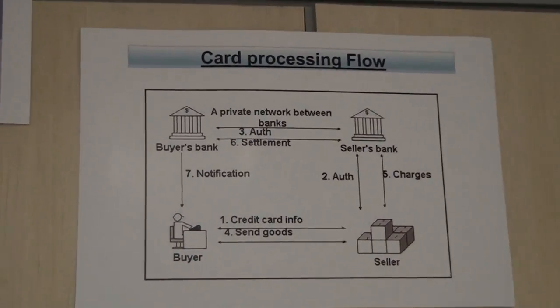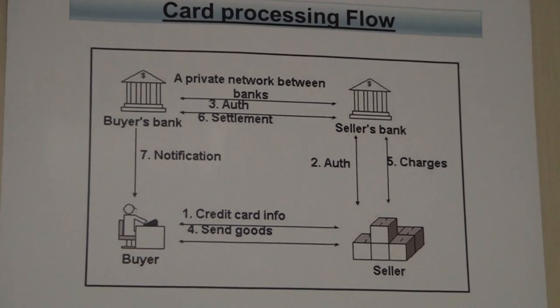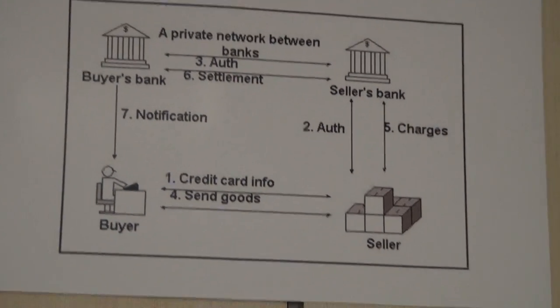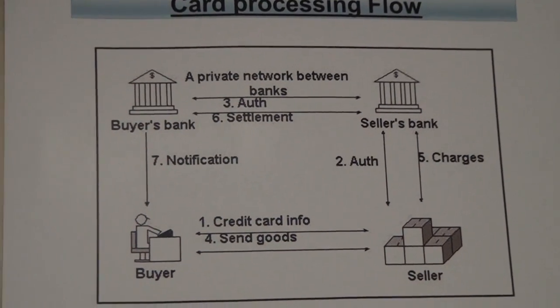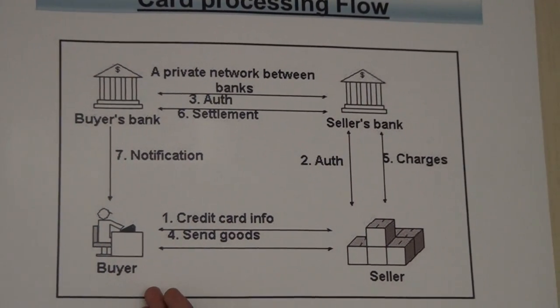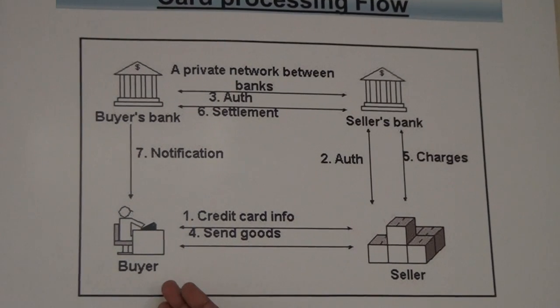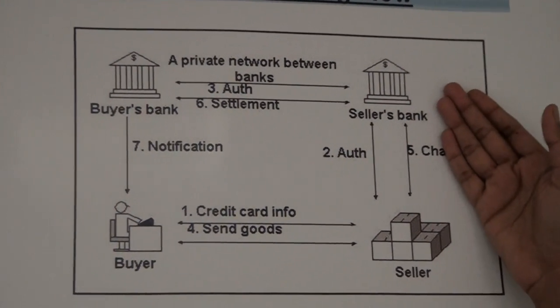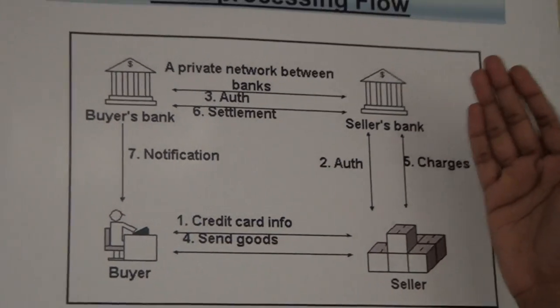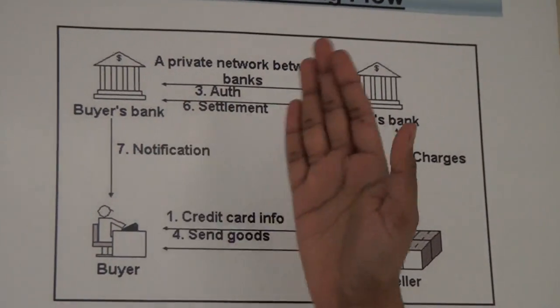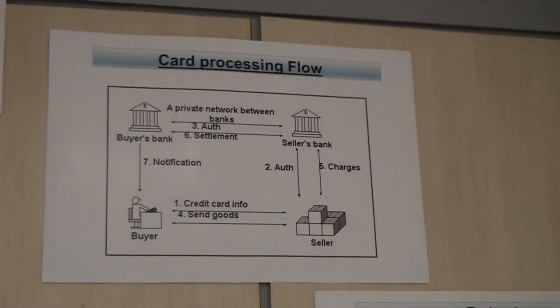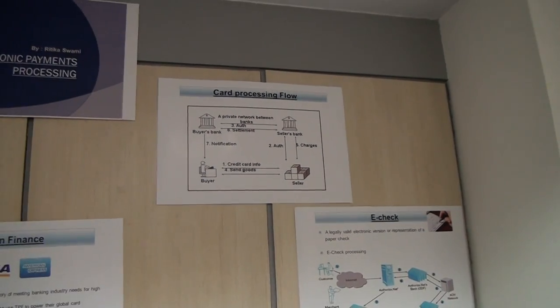So for example, a customer goes to a retail shop, he swipes his card and then the transaction. So what happens in the background? The customer walks into the shop, he gives his credit card or debit card, that is swiped against the seller POS machine. The seller sends the detail to the seller bank. And the seller bank sends the detail to the buyer bank for authorization purpose, where they will decide whether the card member is having sufficient funds for the processing or not.